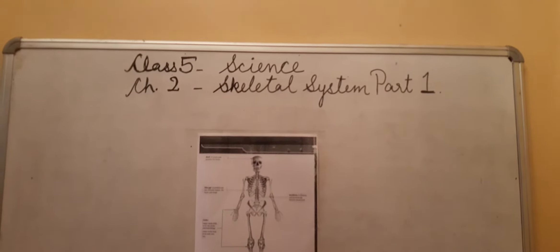Bones are hard and support our whole body. If we didn't have bones, our body would be like jelly or jellyfish. Joints connect our bones and allow movement in our skeleton. Cartilage is softer and more elastic than bone, and you can find it in your nose and ears.